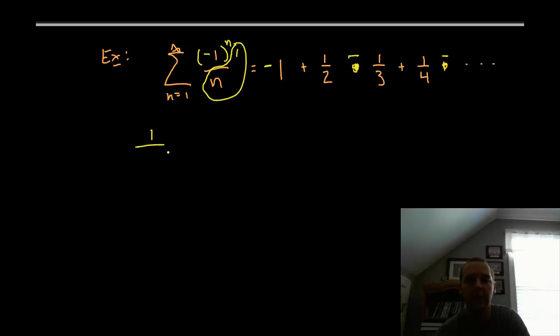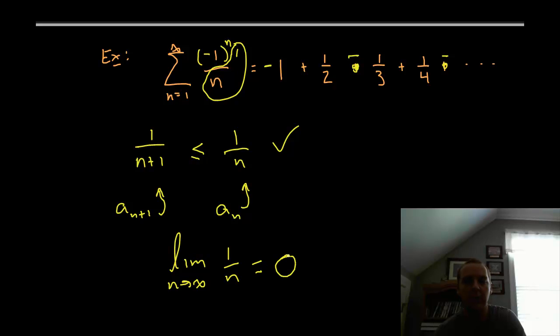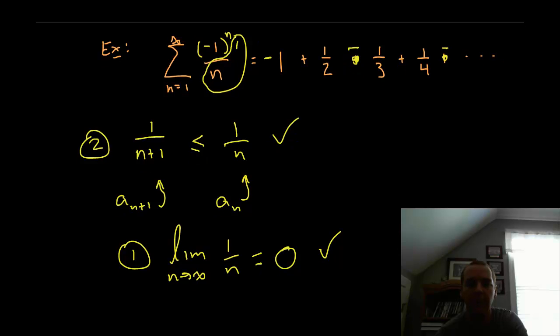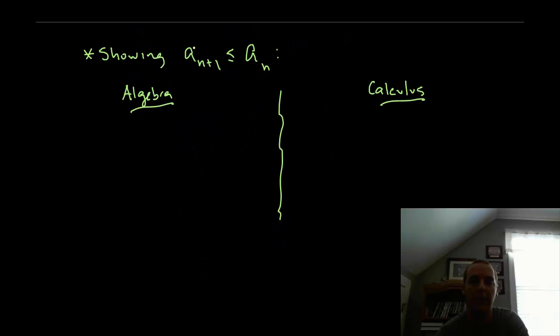So we have to show two things. One is the later term less than or equal to the previous term. So a sub n plus one would be take out the n you replace it with n plus one. Then a sub n would of course be one over n. This is a very simple inequality. Of course it's true when you have a larger denominator of course it's going to make the fraction smaller. And then second of all what's the limit as n goes to infinity for one over n? Well obviously zero. So those two criteria, I guess I did them a little backwards. This is what I called one. This is what I called number two. But they're both true and so this converges by the alternating series test.